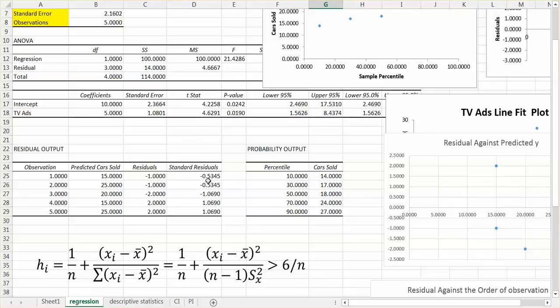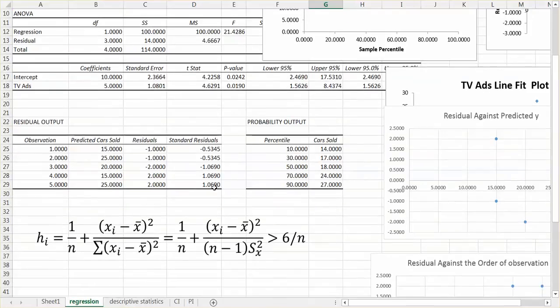For some cases, we have an outlier here. And what we need to do, in order to identify the influential outlier, we need to do one more job.